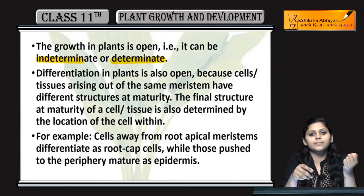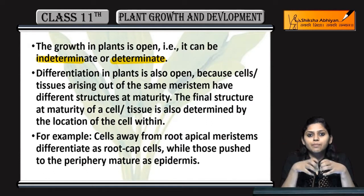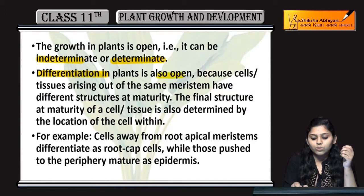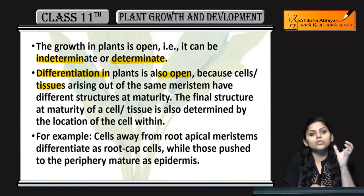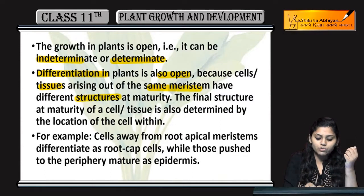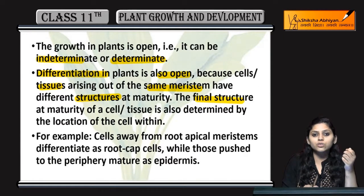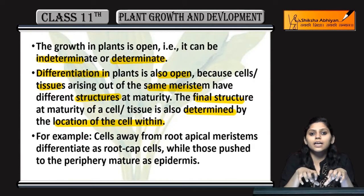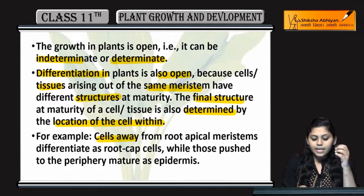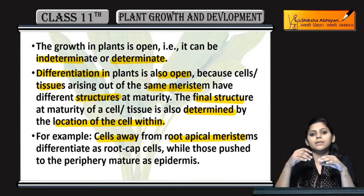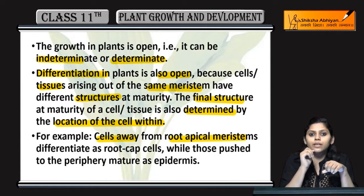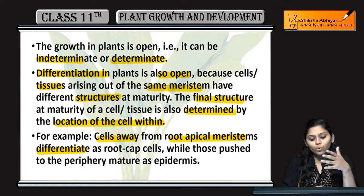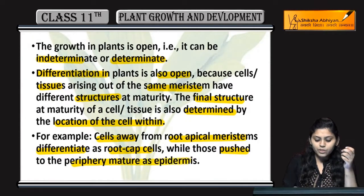Growth in plants is open — it can be indeterminate or determinate. The plant continuously grows as meristematic cells divide continuously. Differentiation in plants is also open, because cells or tissues arising from the same meristem have different structures at maturity. The final structure is also determined by the location of the cell. For example, cells away from the root apical meristem — located at the apex where cells continuously divide — differentiate as root cap cells, while those pushed to the periphery mature as epidermis.